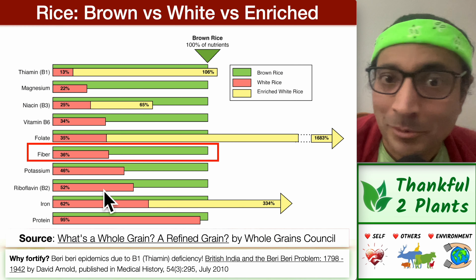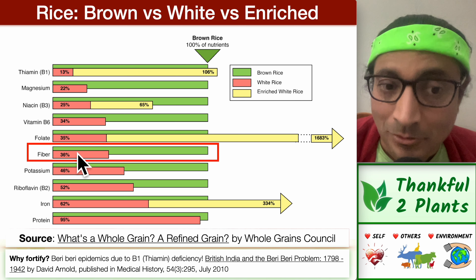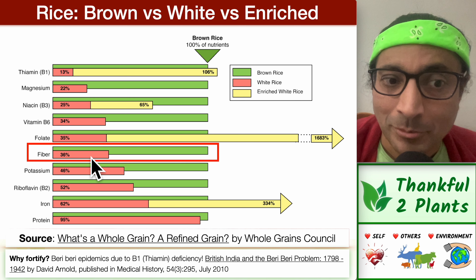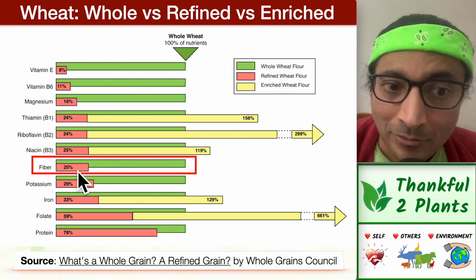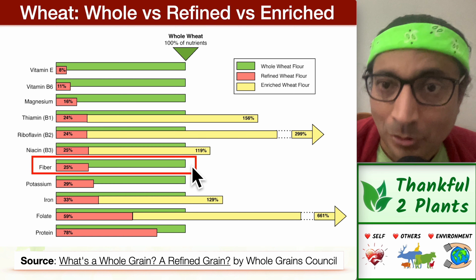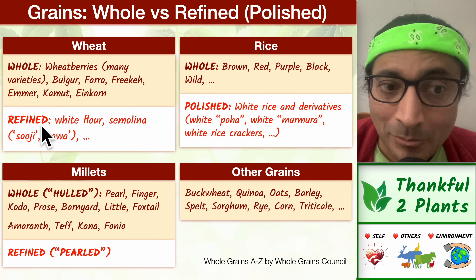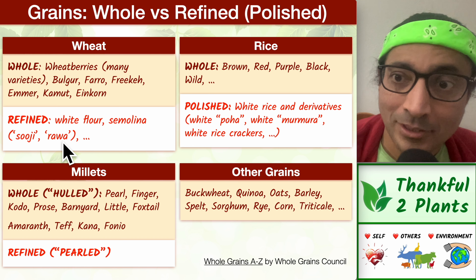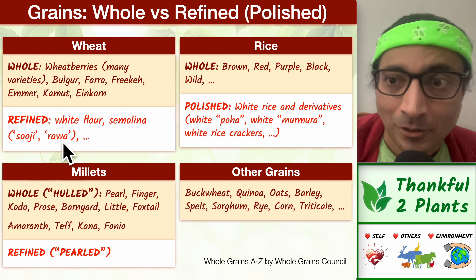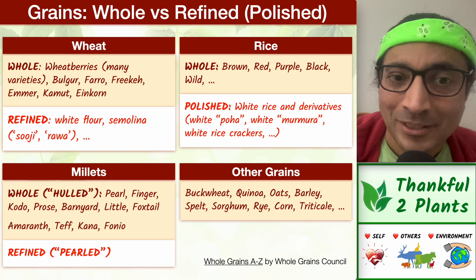How much fiber loss is incurred? White rice has one third the fiber of brown rice. In the wheat world, refined wheat flour has a quarter of the fiber compared to whole wheat flour. We also have semolina — suji, rava — which are polished to some extent and are not whole grains, so bran and germ get removed.